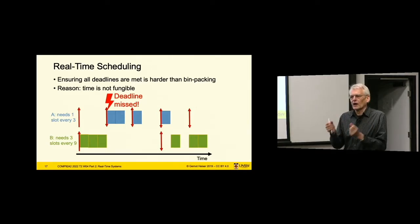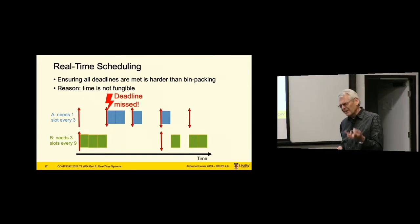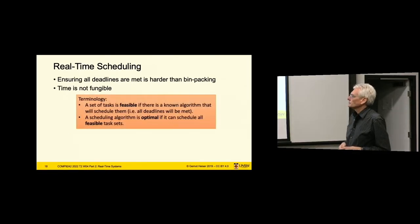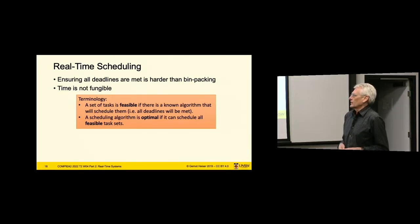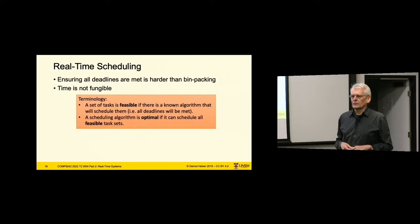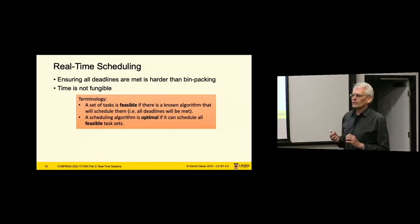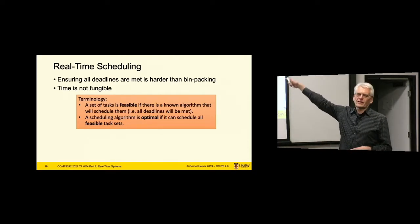It matters not only how much time a task gets, but also when it gets the time — that's the non-fungibility of time, which is what makes real-time scheduling a challenge. We call a set of tasks feasible if it can be scheduled — if there is an algorithm that will schedule it so everything meets its deadline. An optimal algorithm will schedule any feasible task set. So equivalently, a task set is feasible if the optimal algorithm schedules it.